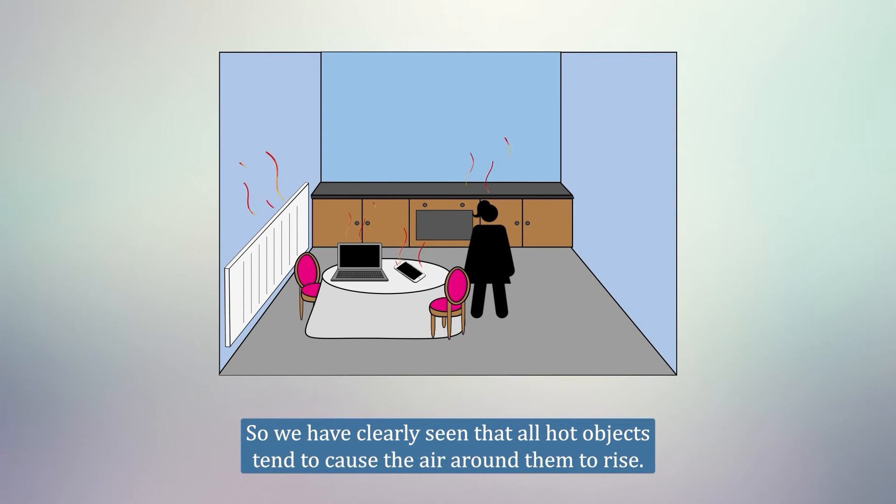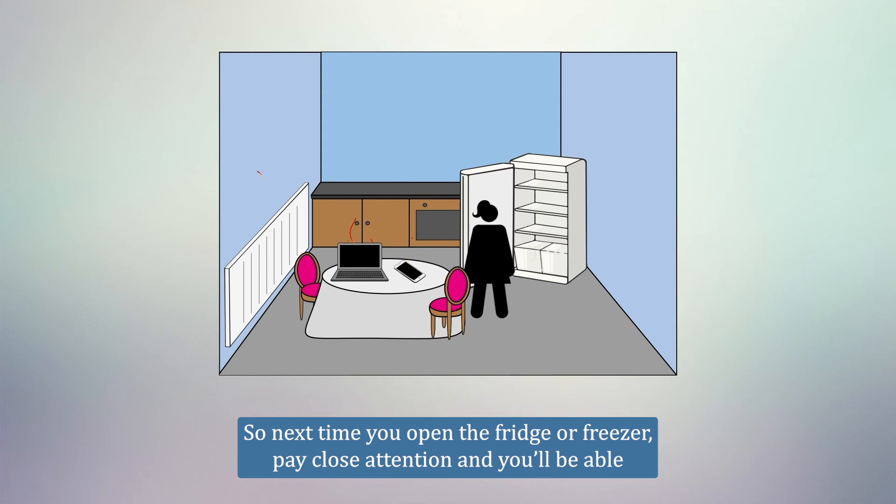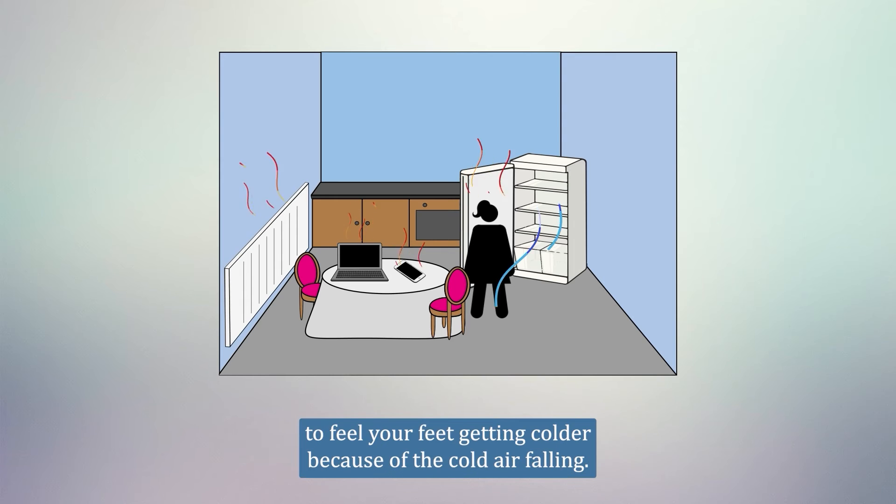So we have clearly seen that all hot objects tend to cause the air around them to rise. But what about cold objects? Well, just the opposite is true. Cold objects cool the air around them, causing it to fall. So next time you open the fridge or freezer, pay close attention, and you'll be able to feel your feet getting colder because of the cold air falling.